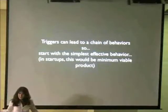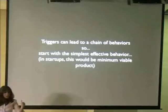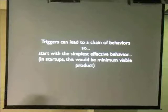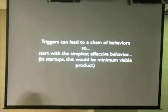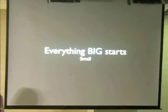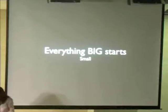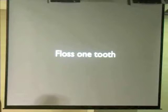Triggers can lead to a chain of behaviors. In the lab, we always say: figure out what the minimum effective behavior is that you want someone to do — whether it's for your cause or your company. In startups, we call this the minimum viable product. There's a lot of overlap between persuasive technology and lean startup methodology. Everything big starts very small. BJ often tells his students not to fall victim to the big brain problem — by the time we get to NUS or Stanford, we've been conditioned to make things very complicated. But in real life, things need to start small so you can measure effectiveness. If you want to get people to floss, tell them to just floss one tooth. Baby steps — very important.